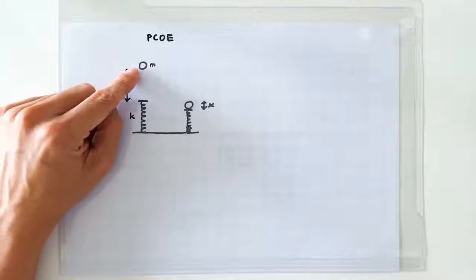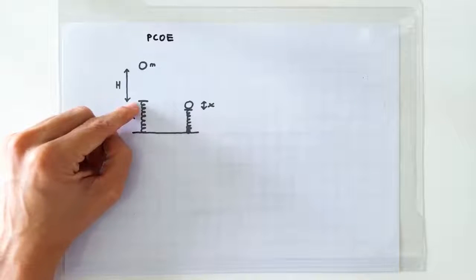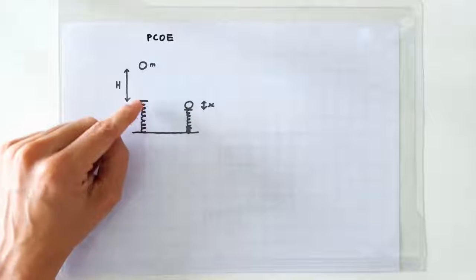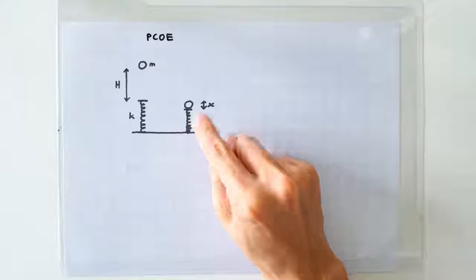We have a ball, mass m, at a height h above a massless spring. The ball is going to drop onto the spring and ends up compressing the spring. We are interested in finding the maximum compression of the spring.